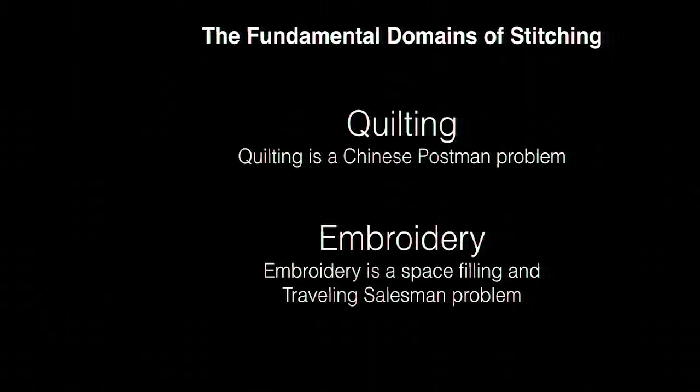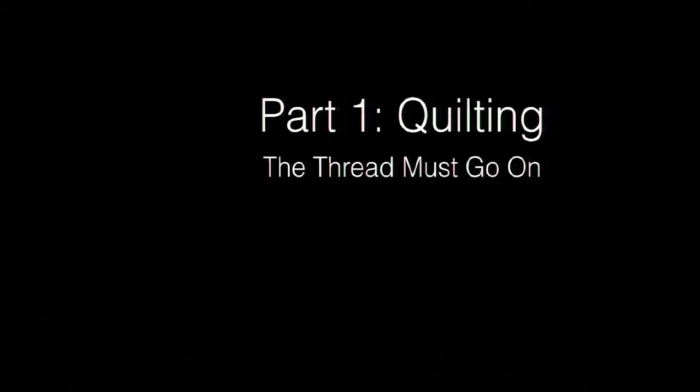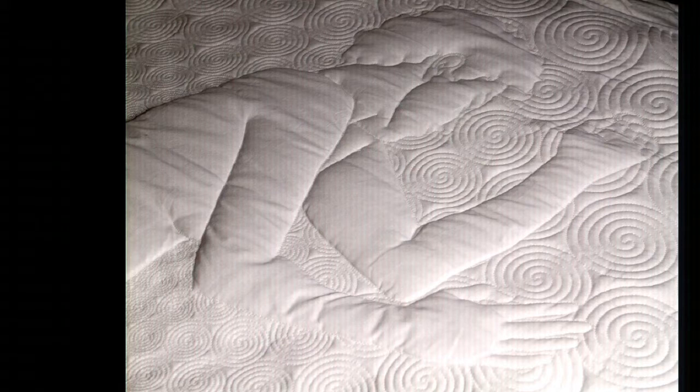There are two fundamental domains: quilting and embroidery. They're quite different even though both involve thread. The number one thing about quilting is the thread must go on — don't cut the thread. Because any time you do that, there's trouble. Pretty much everything is one continuous line — stitched without stopping. At least that's the first approximation; sometimes you have to and then you deal with it.